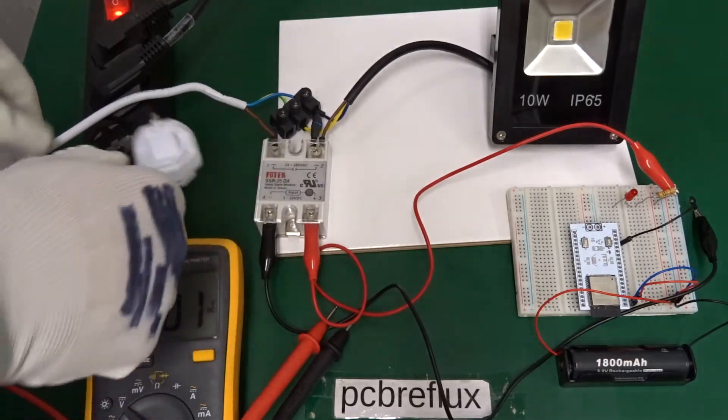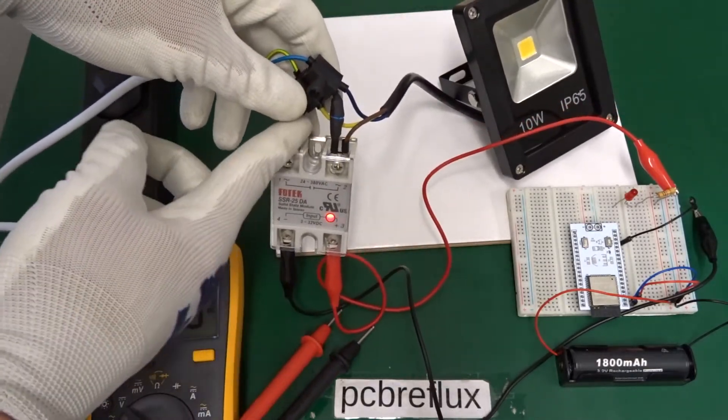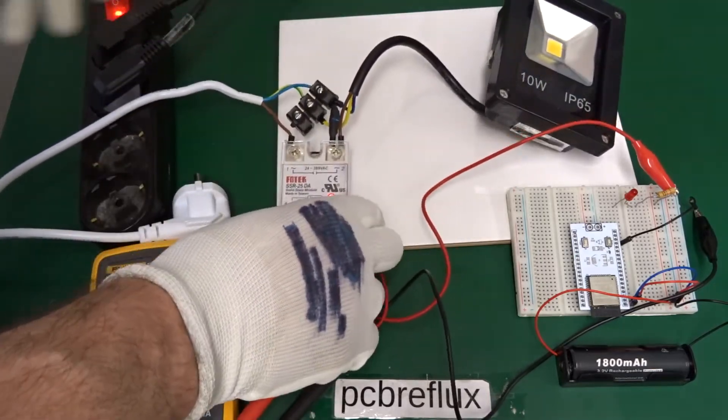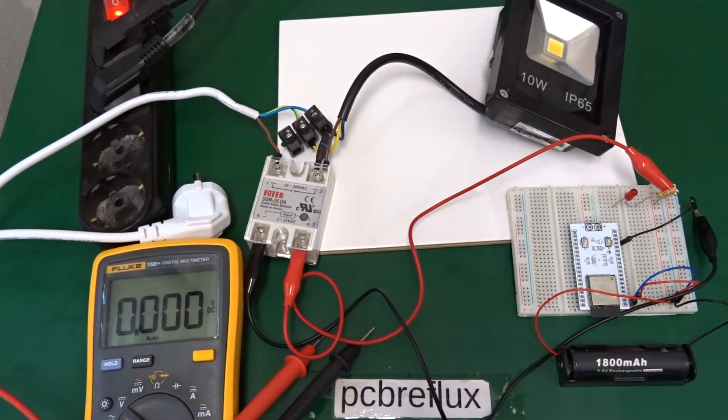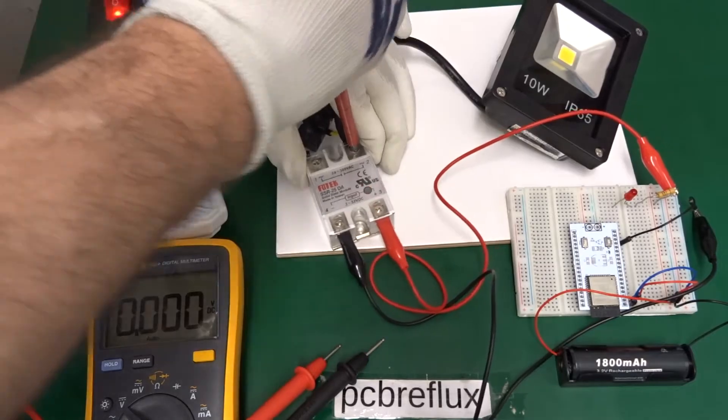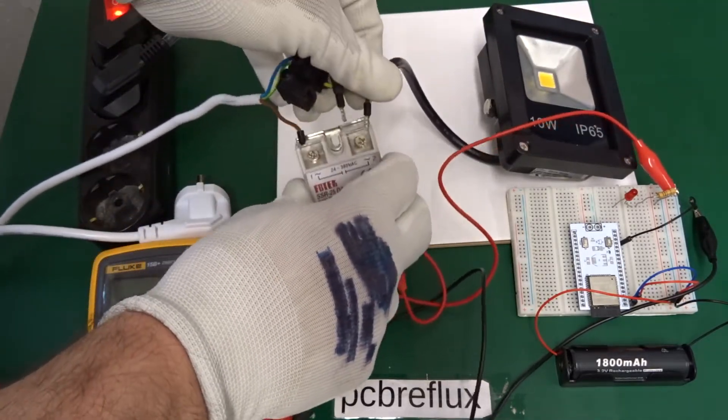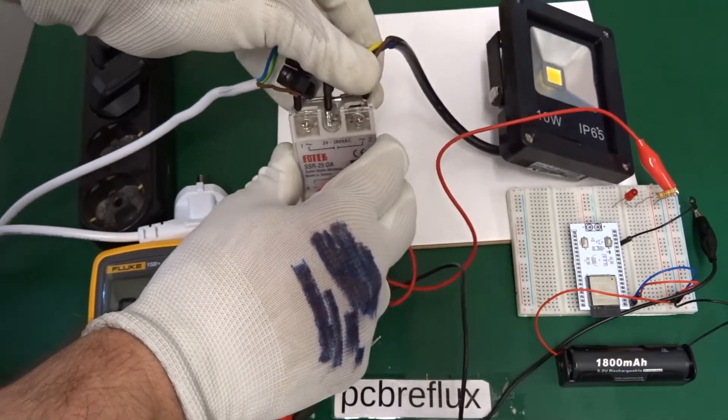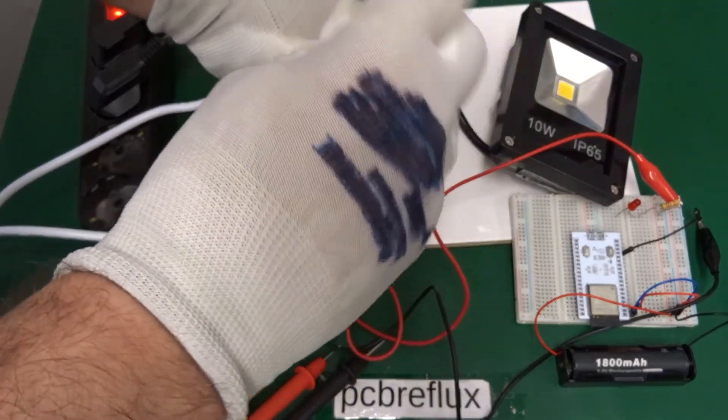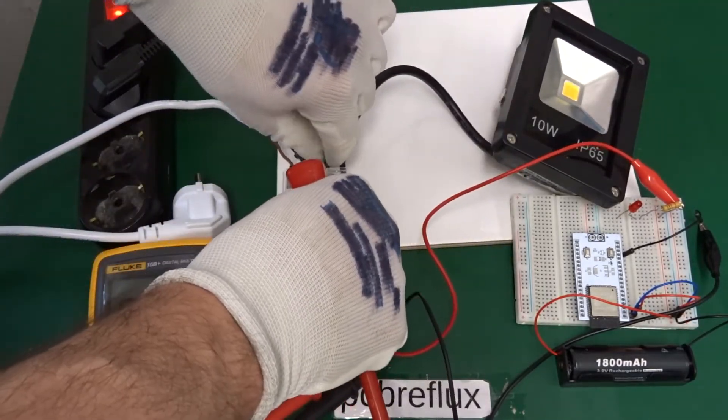So I plugged off the mains voltage so I don't accidentally touch it. And now I show you the reason why I use the dummy resistor. So I disconnect the dummy resistor from the circuit. And you see what's going on with my 10 watt mains voltage LED.